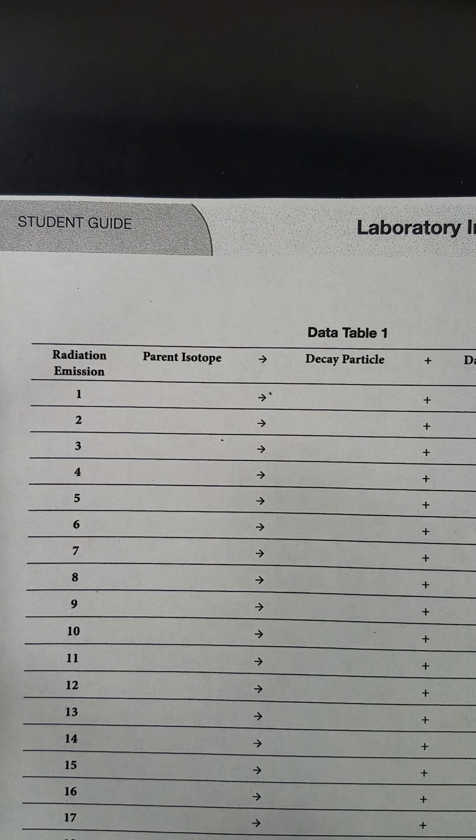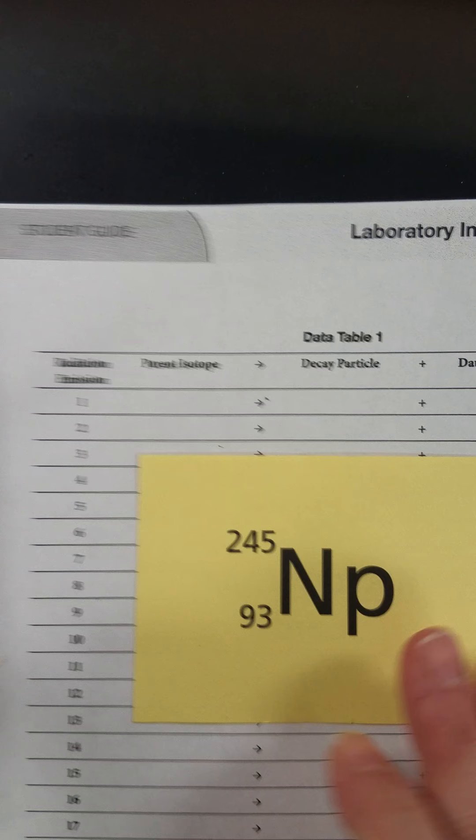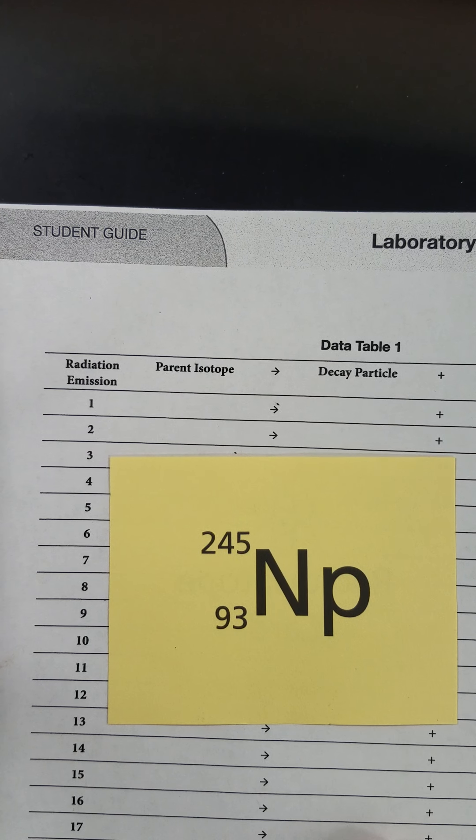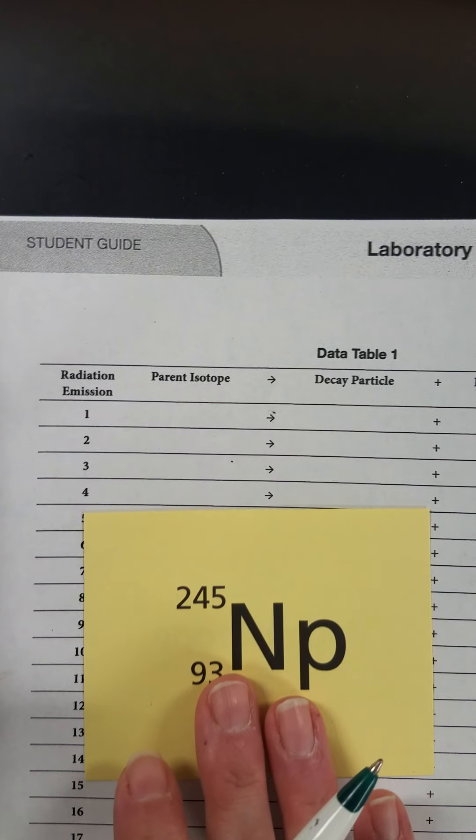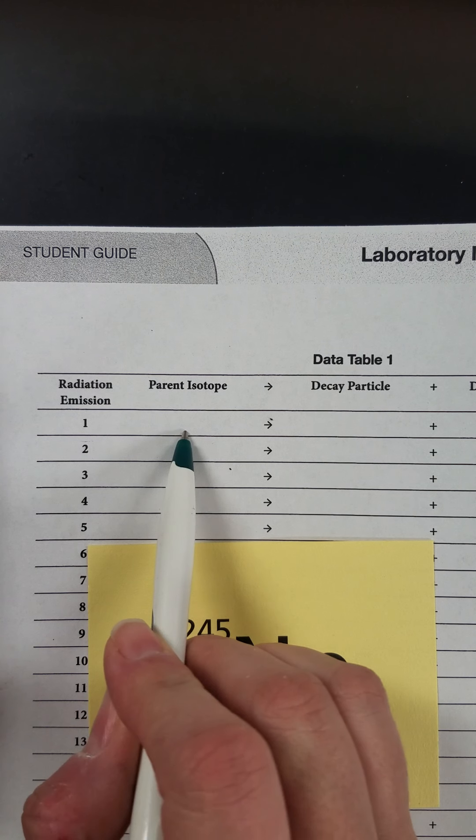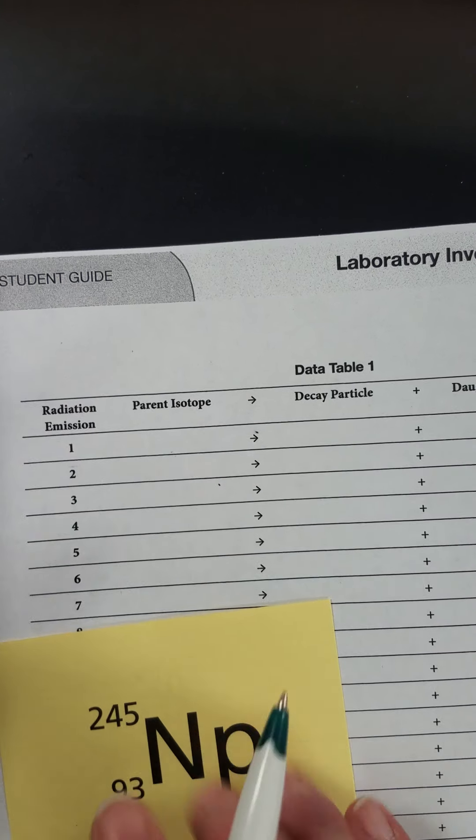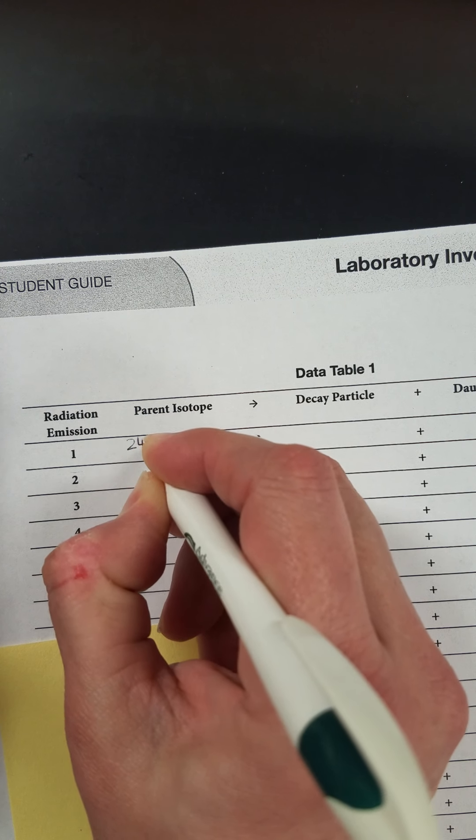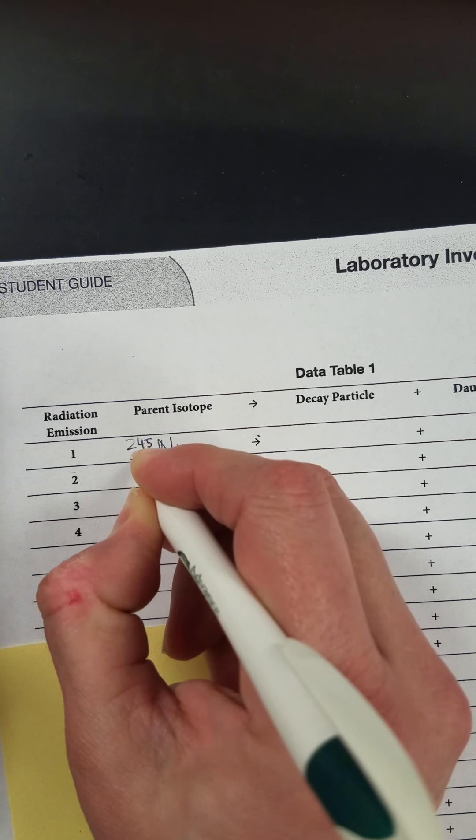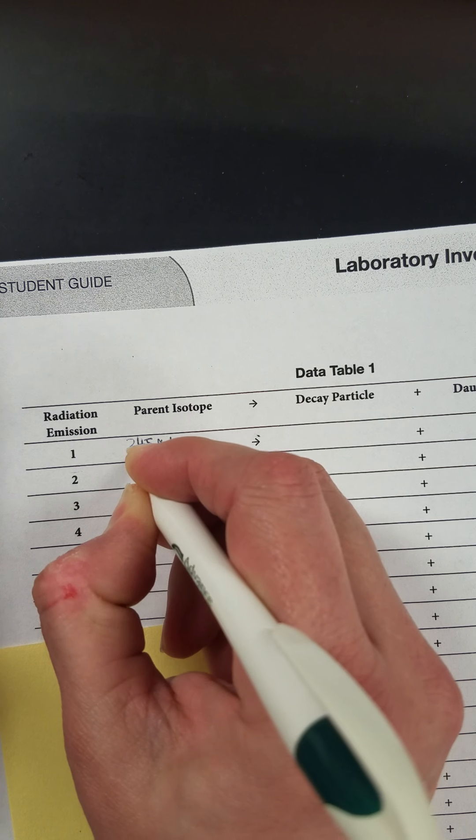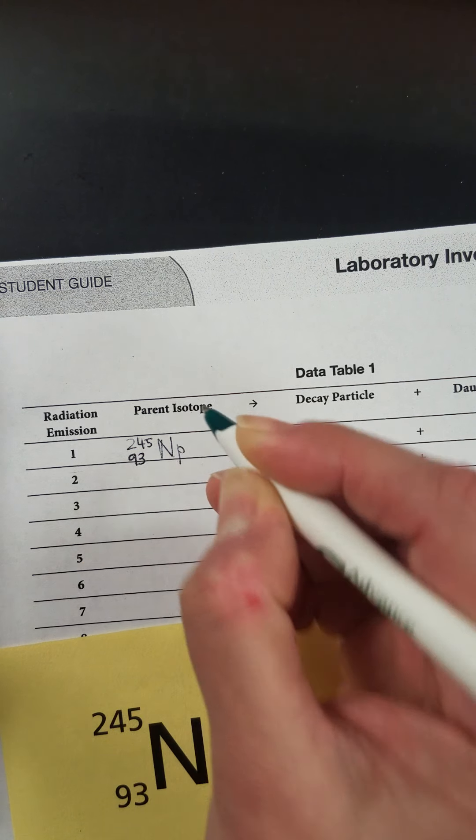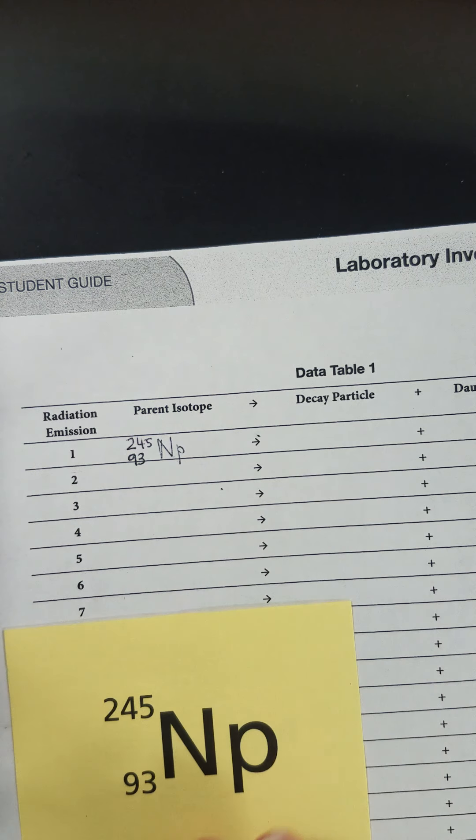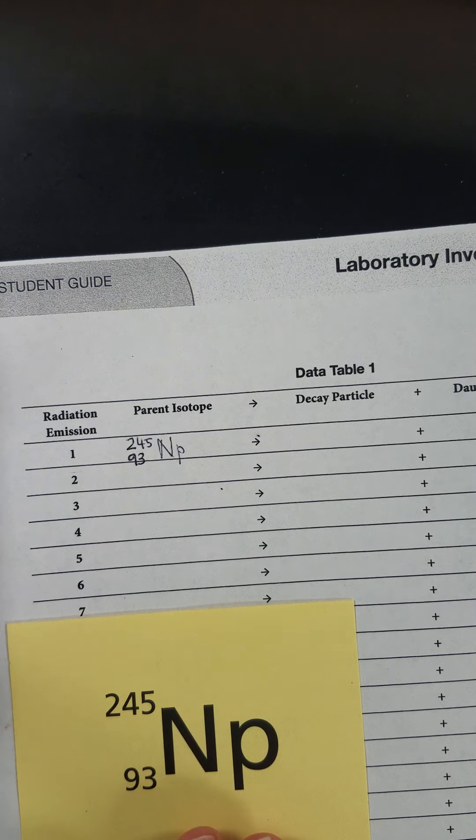So remember that my parent isotope, the one that I'm going to start with, is neptunium-245. So in my first line here with my parent isotope, I'm going to put my neptunium with my atomic notation here with the mass number of 245 and the atomic number of 93. So that's going to serve as my parent isotope.